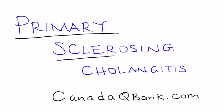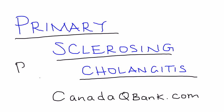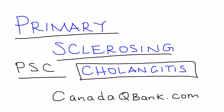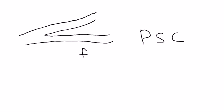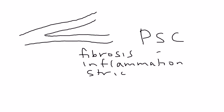Primary sclerosing cholangitis, also abbreviated PSC, is inflammation of the bile ducts. These bile ducts can be intrahepatic or extrahepatic — either in the liver or outside the liver. In PSC, there are many bile ducts in the biliary tree, and what occurs is basically a system of fibrosis, inflammation, scarring, and strictures.